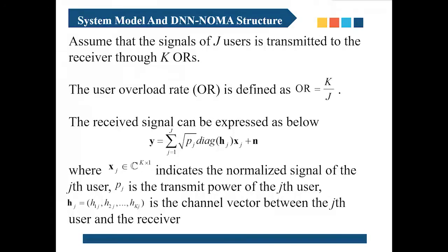The second part is about system model and DNN NOMA structure. Assume that the signals of J users is transmitted to the receiver through K ORs. In NOMA schemes, set K greater than J so that non-orthogonal resource allocation is inevitable. The user overload rate is defined as OR equals to K divided by J. More than one user's data is transmitted simultaneously on each resource. The received signal can be expressed as below.